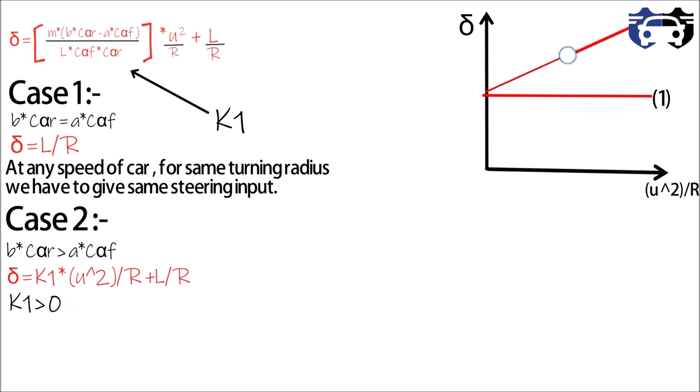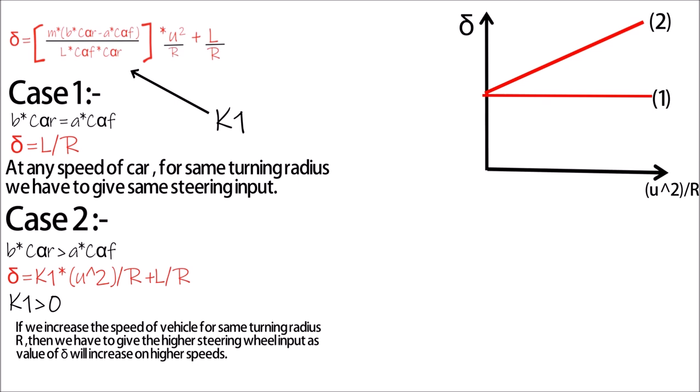As K1 is greater than zero, the curve will be like this with the slope increasing. You can see from the curve, as the velocity of car is increased, the steering angle is also increased. So for the same turning radius at higher velocity, we have to give the highest steering input. Hence, this is understeer.